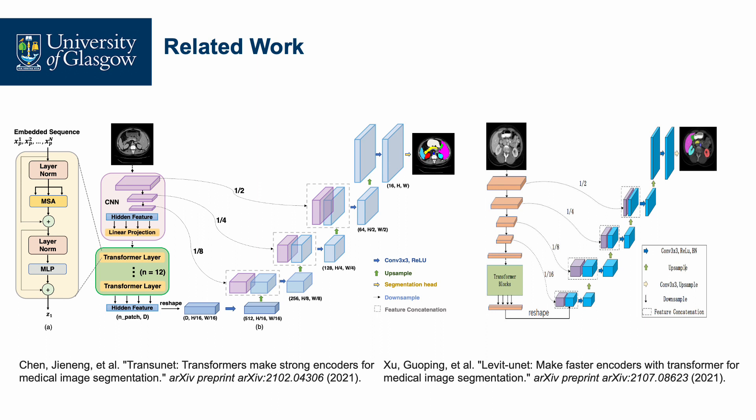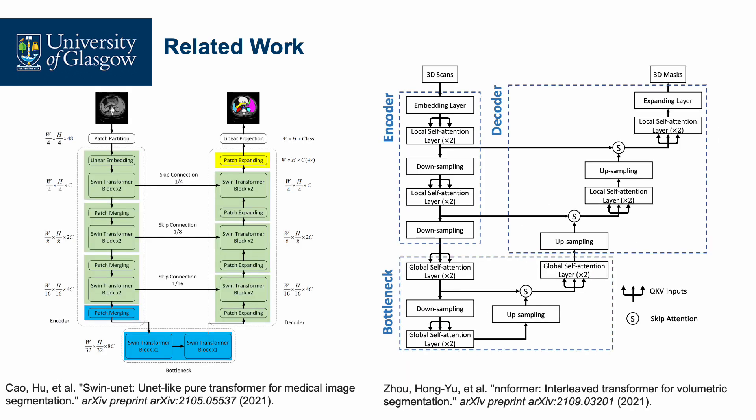Due to having CNN backbones as well as transformer layers, such models are generally bulky and tend to contain around 100 million parameters. The second category is that of pure transformer architectures for medical image segmentation. Networks such as SWIN-UNA and Eninformer create encoder-decoder models using only transformer blocks to perform both feature extraction and segmentation map decoding.